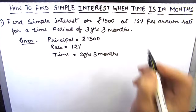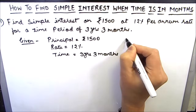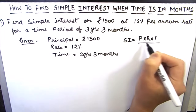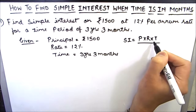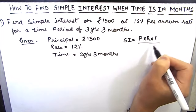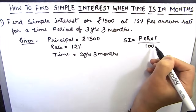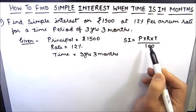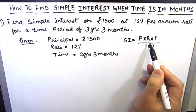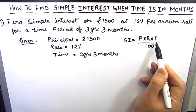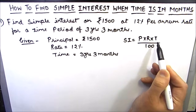The formula for simple interest is principal times rate of interest times time divided by 100, where rate of interest is in percentage per annum and time is in years.